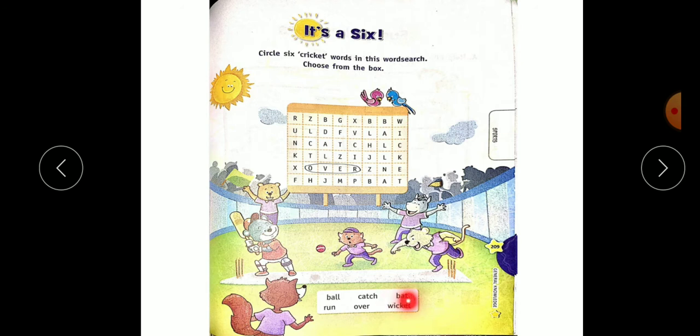Now next is B-A-T, bat. Where is bat? Here. B-A-T, bat. Now last one is R-U-N, run. R-U-N, run.